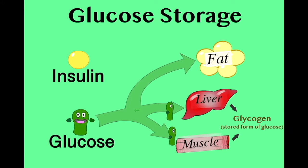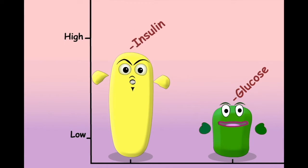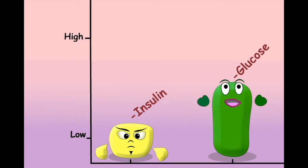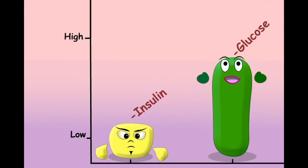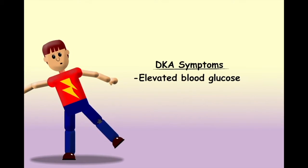Normally any excess blood glucose is put into storage for later use. Insulin is once again the hormone that regulates this process. High insulin levels promote the uptake of glucose into the liver, fat and muscle cells. As Tim's blood insulin levels reduce, this process slows and then stops. Glucose is not being used for energy and is not being taken into storage. With nowhere to go, glucose begins to accumulate in Tim's blood. If he were to check his blood sugar now, he would see one of the first symptoms of DKA: an elevated blood glucose reading.